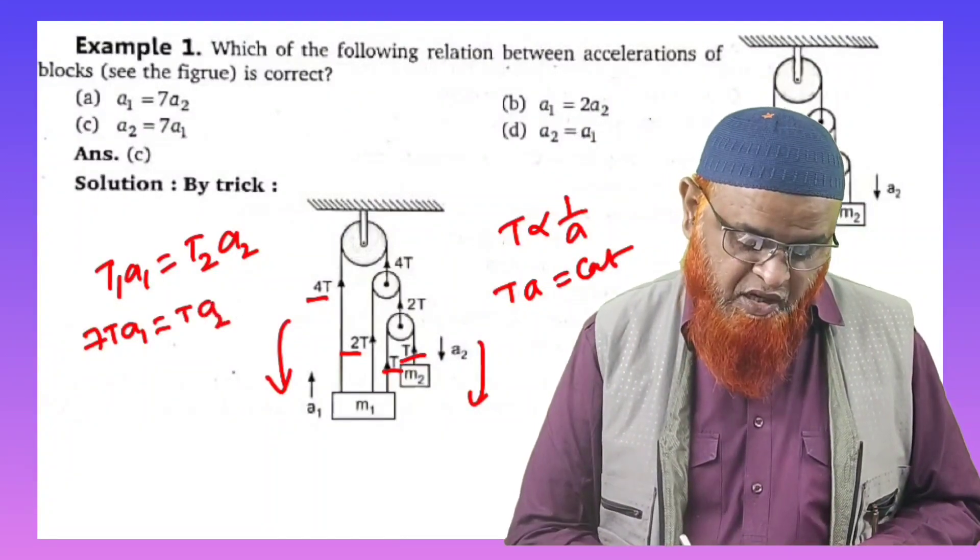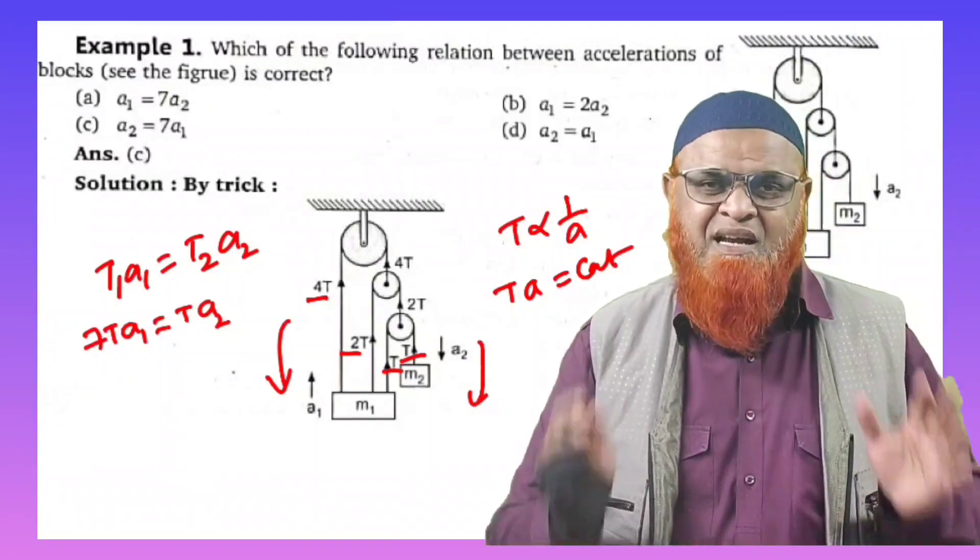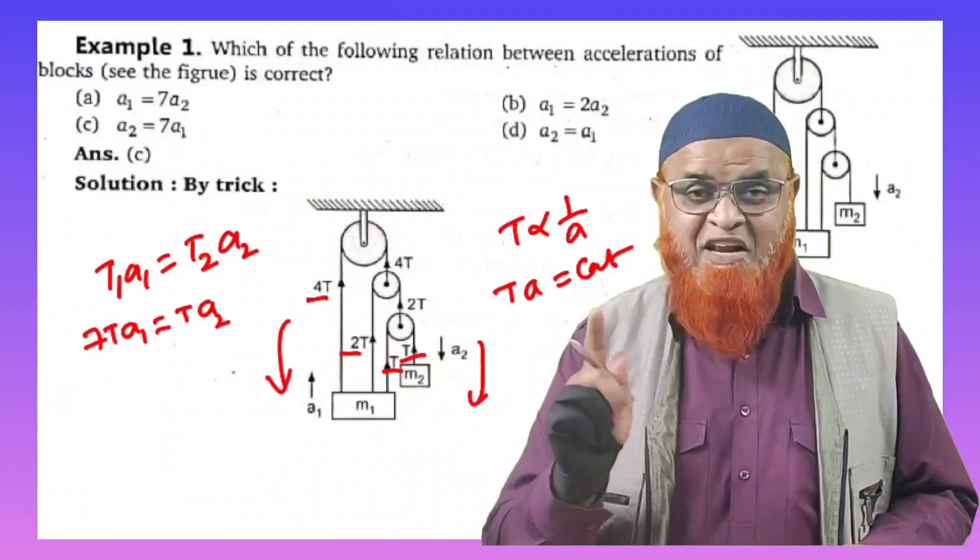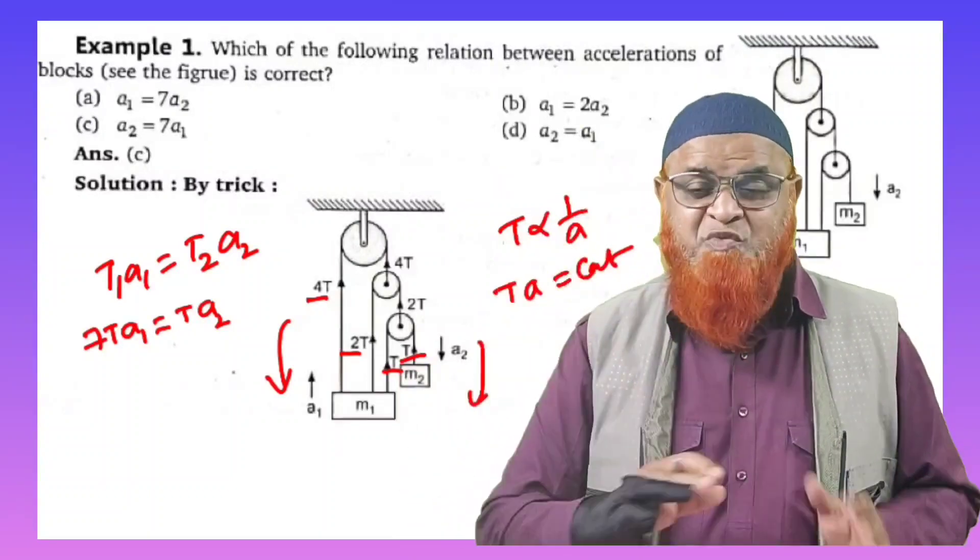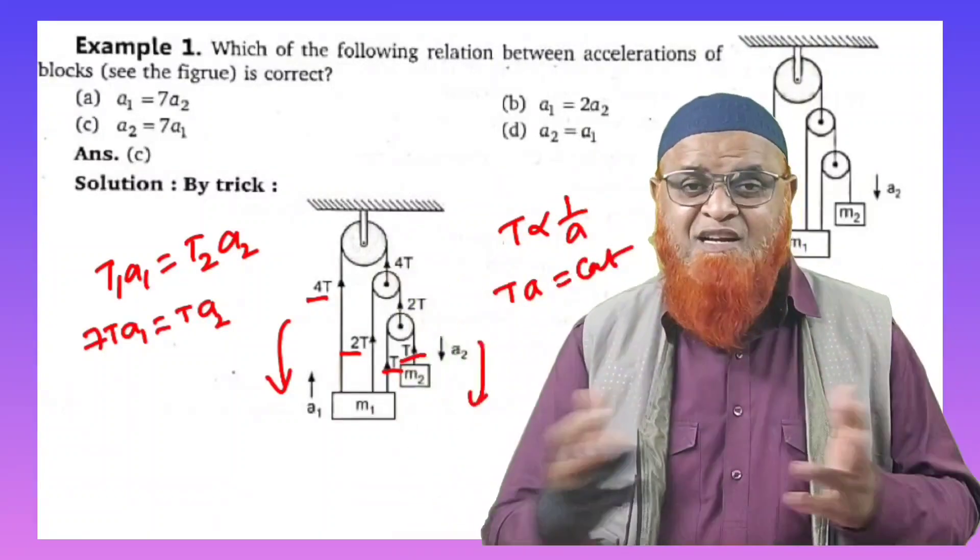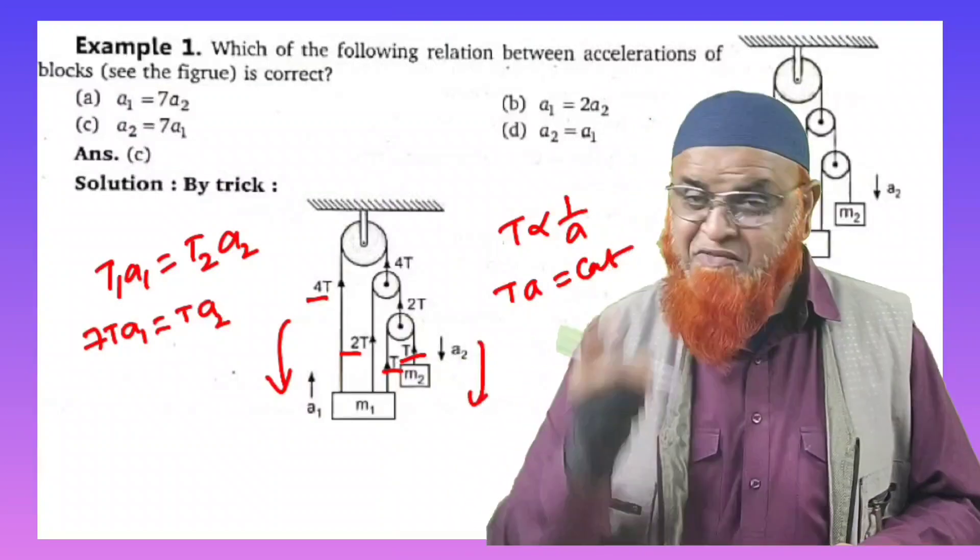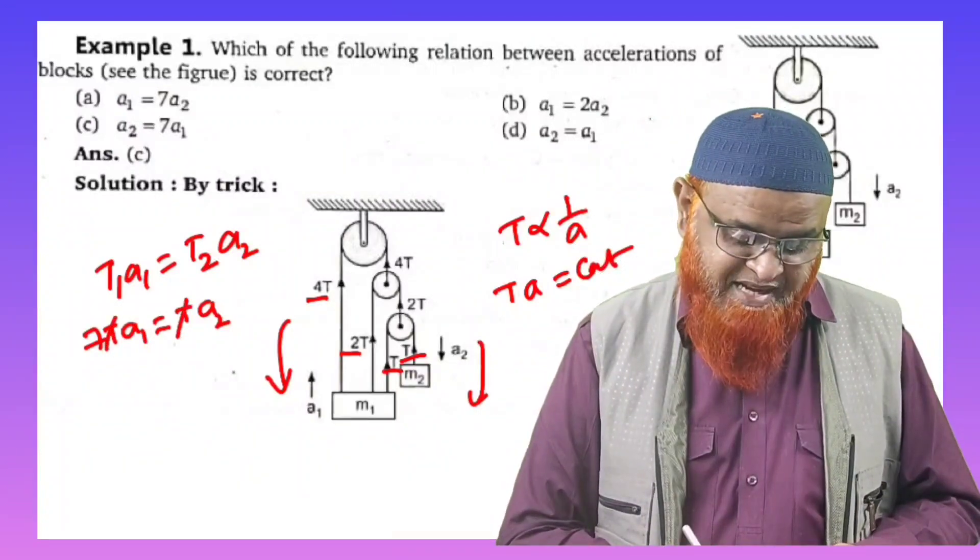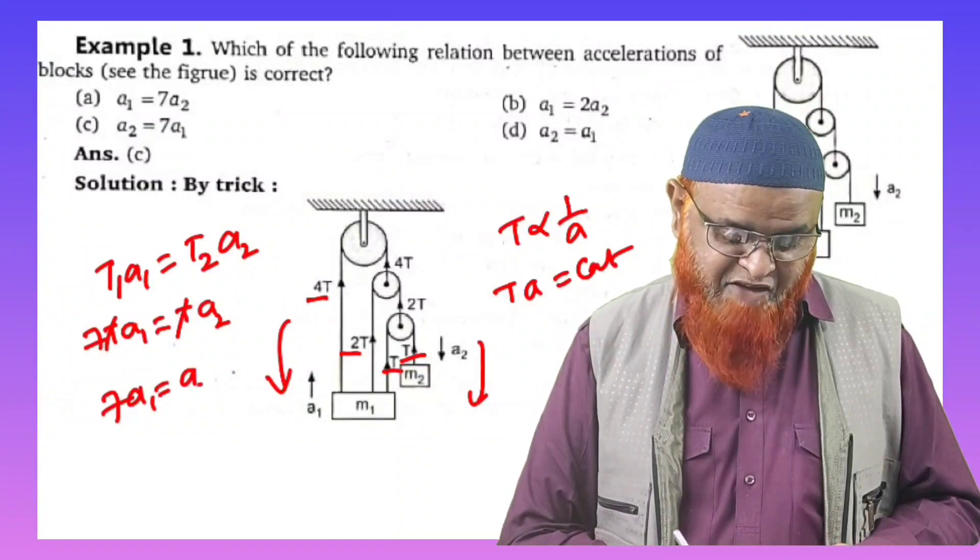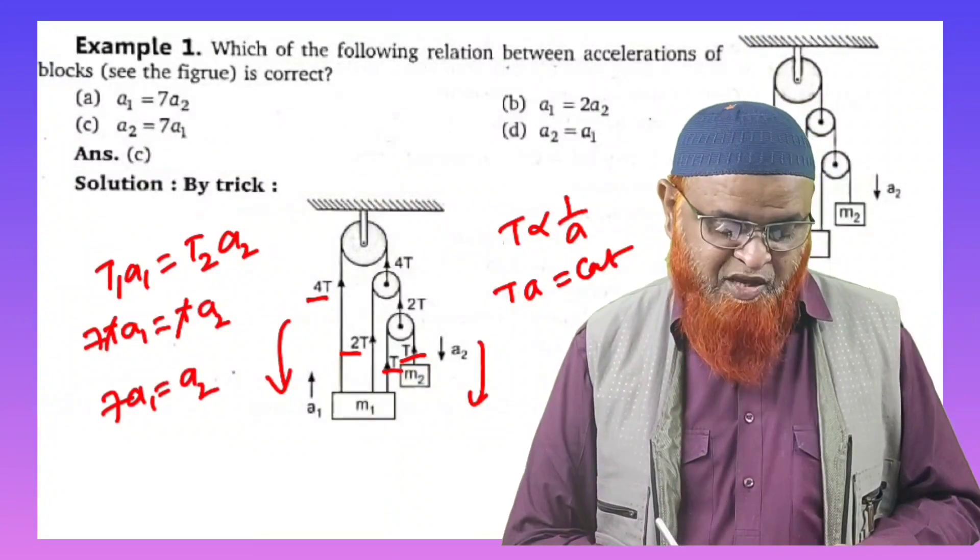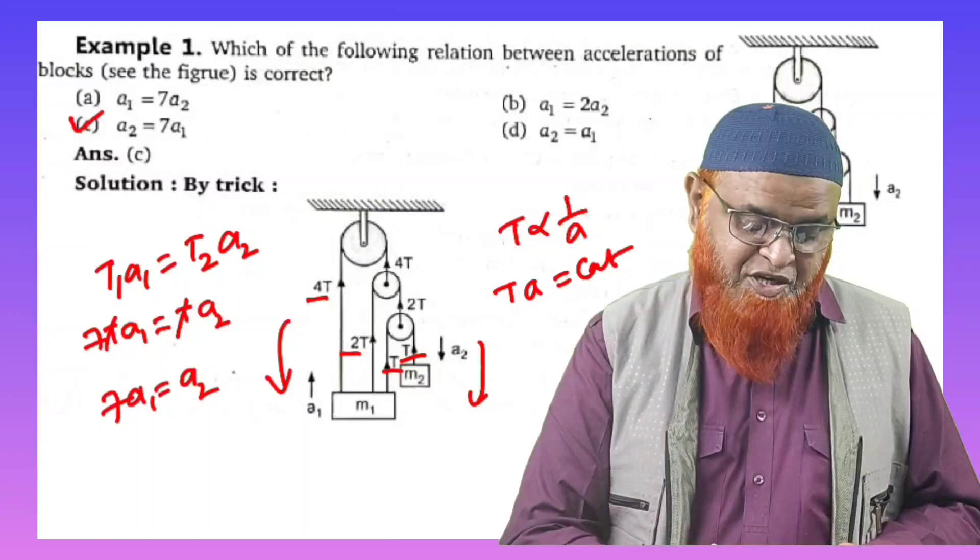That's it. With this, no need of any free body diagram, no need of any multiple equations for writing the length of the strings and so on. You'll enjoy a lot—this is a very amazing short trick. You can just cancel out tension. With this, it is clear that 7a1 equals a2. So option C is the correct answer.